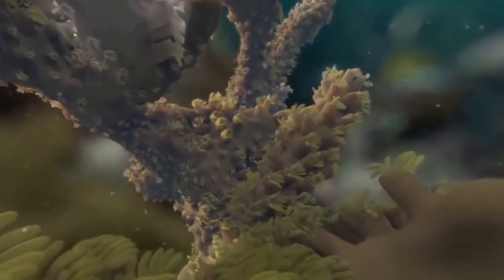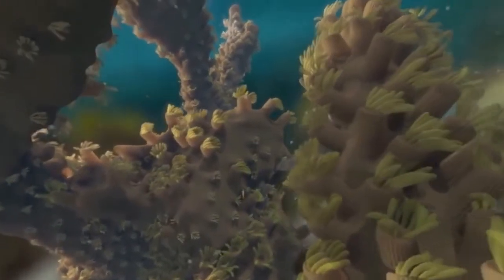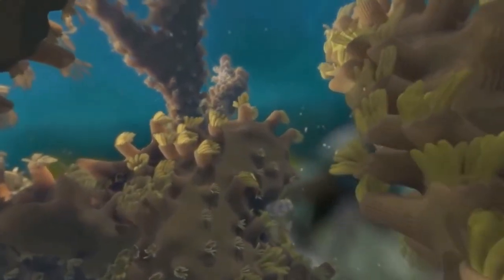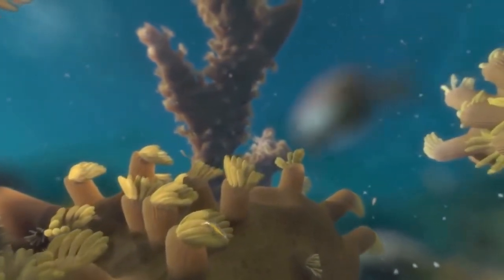Each coral is actually made up of an entire colony of tiny animals called coral polyps. And like all animals, they eat.